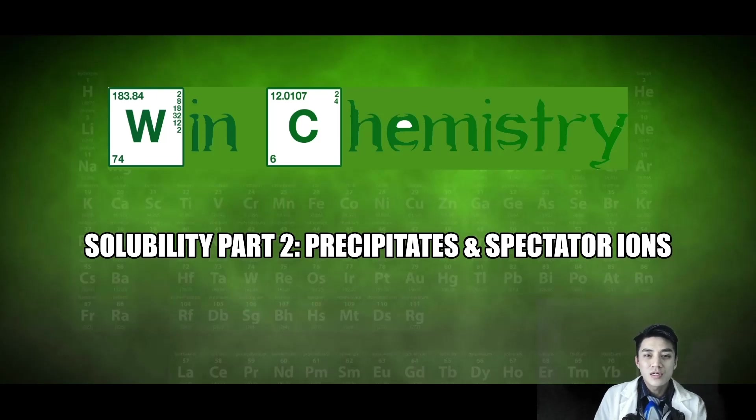Hello and let's win some more chemistry. Welcome to part two of solubility. In this segment we're going to learn about precipitates and spectator ions. Basically what happens when you mix two different solutions, you're going to get a solid precipitate that appears and then some spectator ions that don't contribute at all to the reaction.